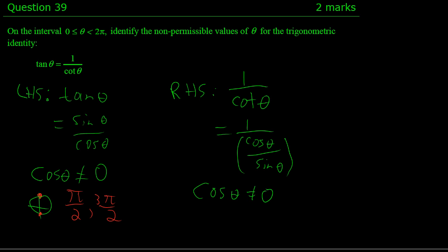So not only can cosine of θ not equal 0, even if the top is 0, 0 divided by sine is 0, so it's still 1 over 0. That's no good. So I could borrow these values over here for the same reason, so that's still π/2 and 3π/2.